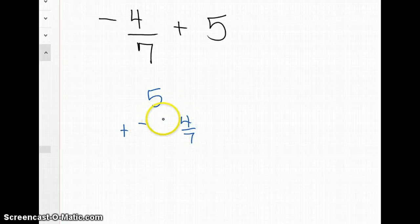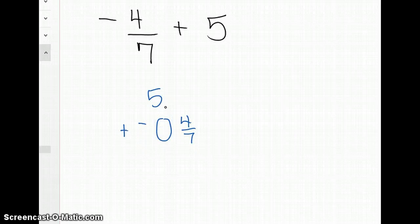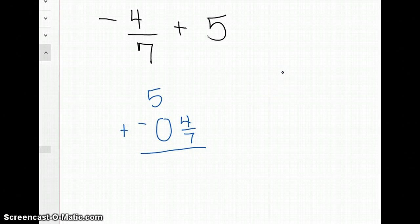To help you understand, we have 0 as our whole number when we're working with negative 4 sevenths. So this is really working with the problem 5 minus 4 sevenths.